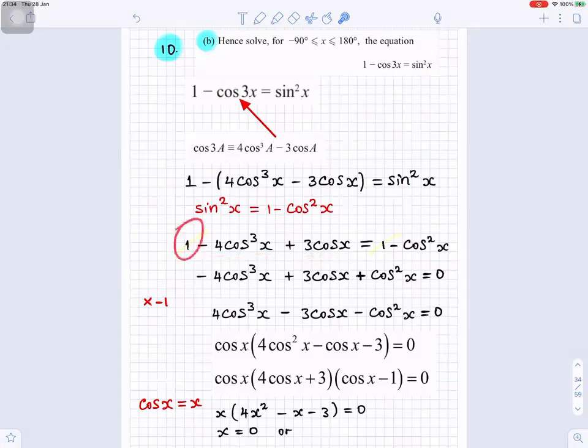So, 1 minus 4 cos³x plus 3 cosx equals 1 minus cos²x. Now, there's this one on the left and this one on the right. They can cancel each other. 1 minus 1 is 0. You're left with minus 4 cos³x plus 3 cosx, and you take the minus cos²x to the left. It becomes plus cos²x. You can multiply by minus 1, so this minus becomes a plus, this plus becomes a minus, and this plus becomes a minus. Equal to 0.